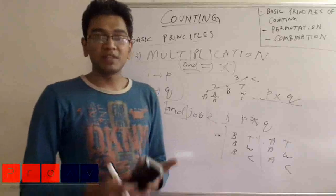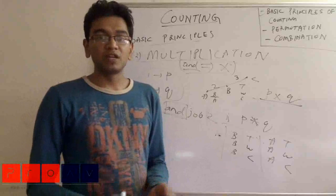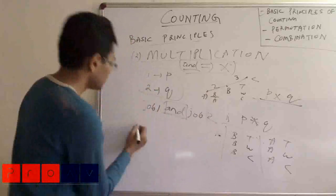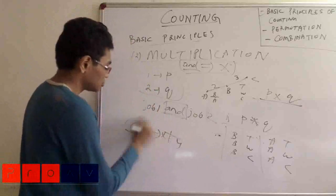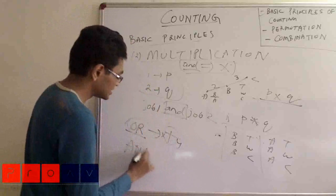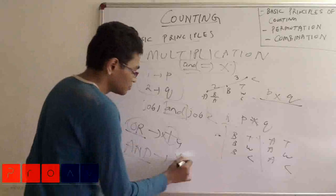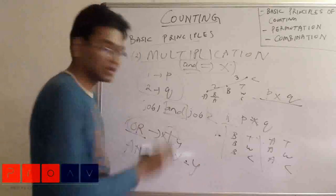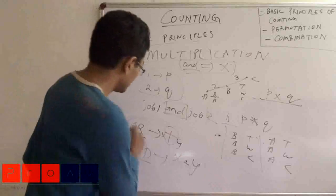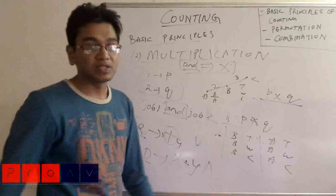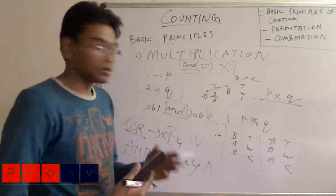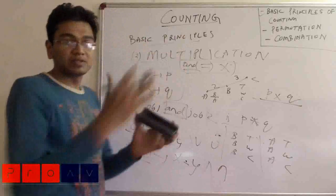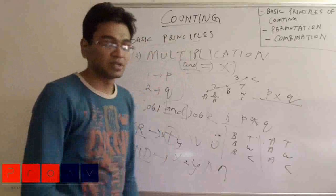There are two main basic principles in mathematics regarding counting: one is of addition and one is of multiplication. The addition principle says if you can do one job in x ways and another job in y ways, the number of ways of doing job one OR job two is x plus y — 'or' gets transformed into addition. Multiplication says 'and' gets transformed into multiplication. This is similar to logic: 'or' becomes union and 'and' becomes intersection in set theory.